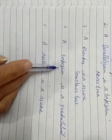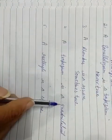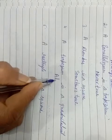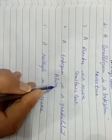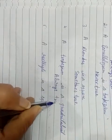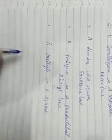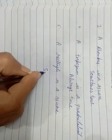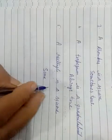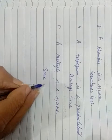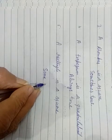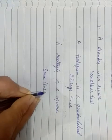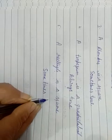A trapezium is a quadrilateral — always true, because it has four sides so it is a quadrilateral. Always true. A rectangle is a square — sometimes true, because sometimes a rectangle can be a square if all its sides are equal. Sometimes true.